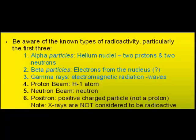I want you to be aware of a few forms of radioactivity. Here's a list of six common ones, but the first three are important for our class. These first three — alpha particles, beta particles, and gamma rays — are also natural forms of radioactivity. That means the other three in the list are synthetically produced.